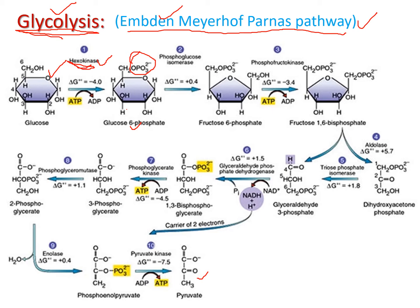In the second step, this is an isomerization reaction. Glucose-6-phosphate is converted to fructose-6-phosphate. Both molecules have the same molecular formula, but they are structural isomers. The enzyme converting glucose-6-phosphate to fructose-6-phosphate is phosphoglucoisomerase.